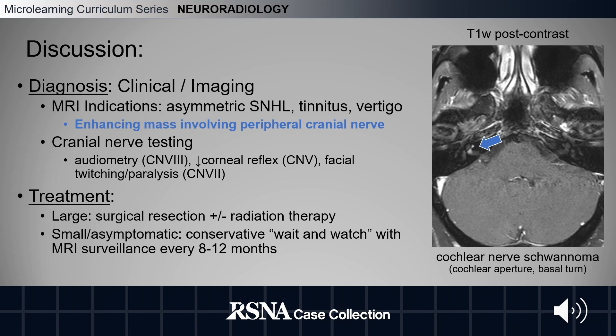Treatment for a large vestibular schwannoma typically includes surgical resection and/or radiation therapy. For a small or asymptomatic vestibular schwannoma, a conservative wait-and-watch strategy with MRI surveillance every 8 to 12 months is recommended.